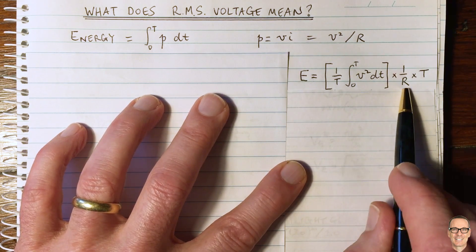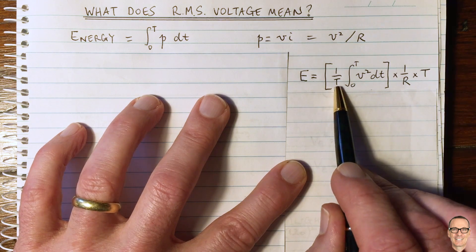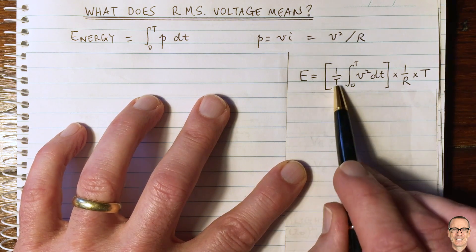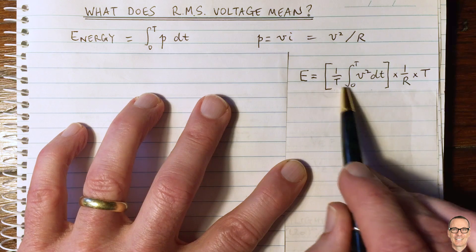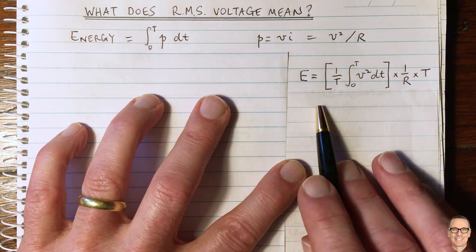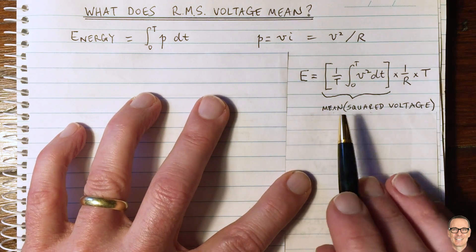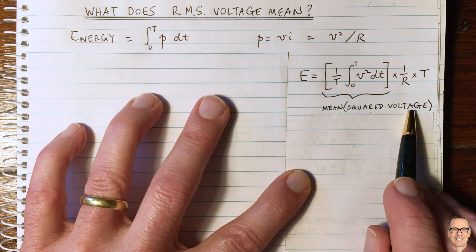Now, what I've done, I've got the one on R outside the integral, but I've also multiplied by one on T and I've taken the T out the front. But now we can see that in the square brackets, we've got something which is the mean of the squared voltage.